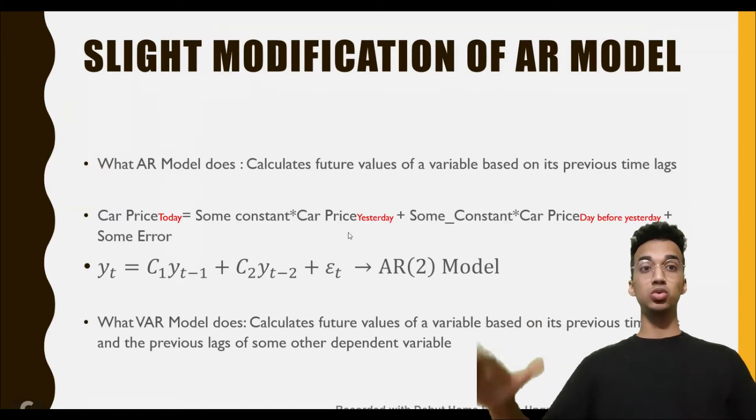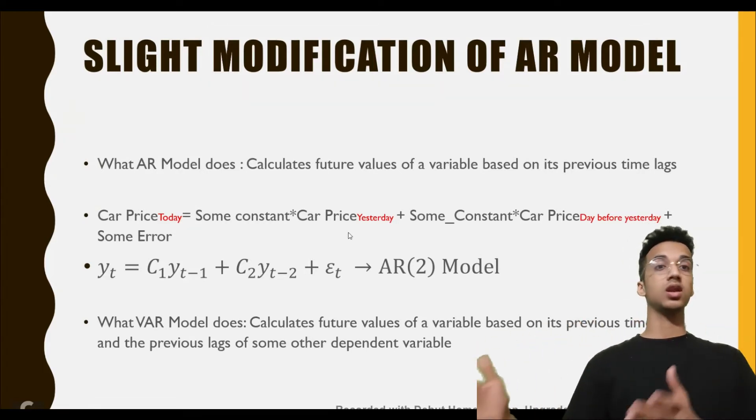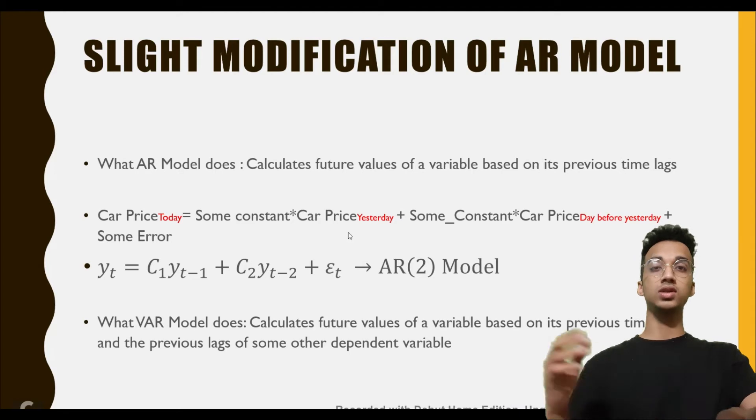This is basically an autoregression of the second order, because the current value of the car price is dependent on the value in the past two time periods. This time period could be the last month, the last year, or just last day. The mathematical symbols would look like y_t = c1*y_{t-1} + c2*y_{t-2} + ε_t.